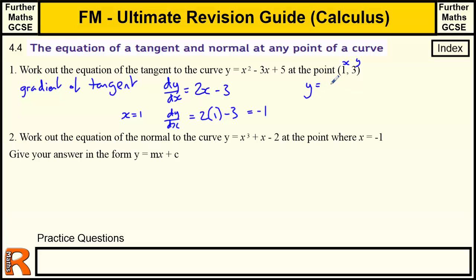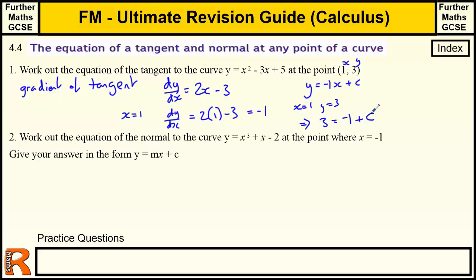Now we use the general equation for a line: y equals mx plus c, where m is the gradient. We just worked out the gradient is minus 1, so y equals minus x plus c. To work out c, we just use the point we know our line goes through: (1, 3). When x is 1, y must equal 3, so 3 equals minus 1 plus c, which means c equals 4. So the equation is y equals 4 minus x.